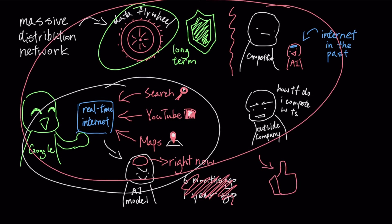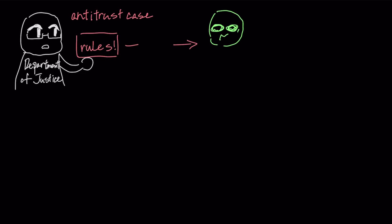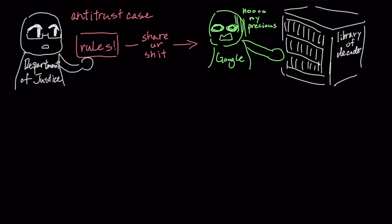However, even with all these structural advantages, there are some significant challenges that could prevent them from maintaining this dominance. The Department of Justice citing a recent antitrust case is pushing for rules that would force Google to share its search data with rivals, which means handing over the library of information they have spent decades organizing to the very companies trying to beat them.